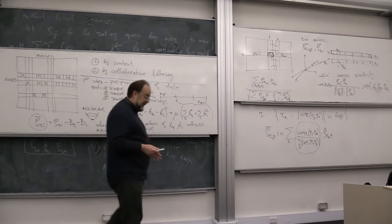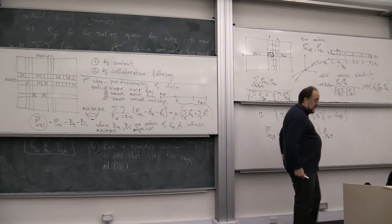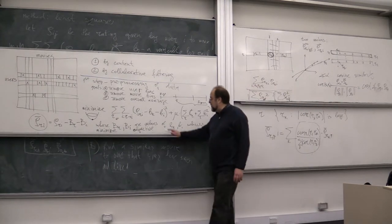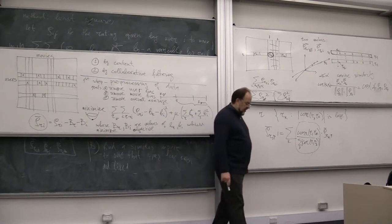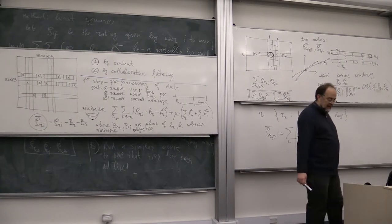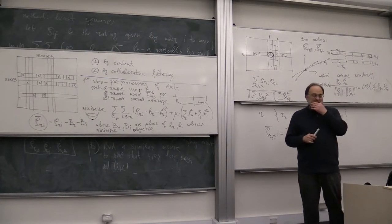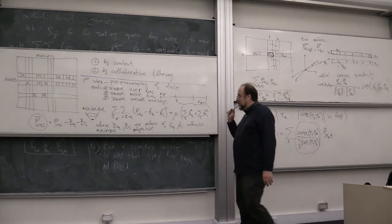But you still solve the same least squares except that now you have three times as many variables. But apparently, in the Netflix challenge, adding this time dependency improved the predictive ability of the recommender system. Okay, any questions about this? This is not trivial, but it is simple.